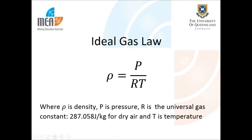Air density for table two is found using the ideal gas law expressed as a function of temperature and pressure, where p is the absolute atmospheric pressure, r is the specific gas constant which is 287.058 joules per kilogram for dry air, and t is temperature in kelvins.